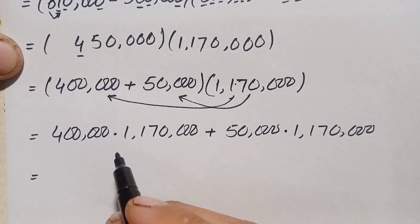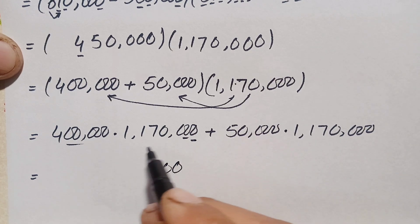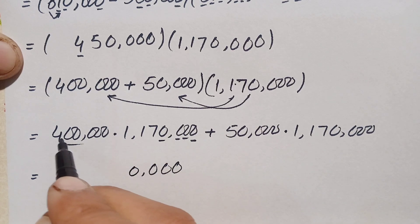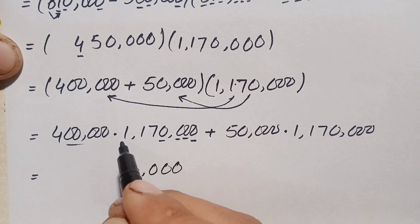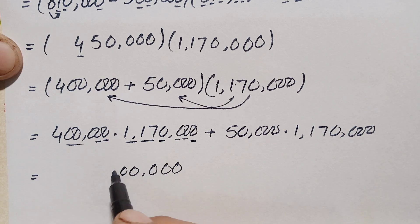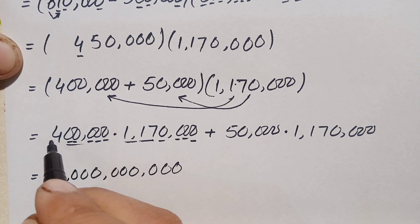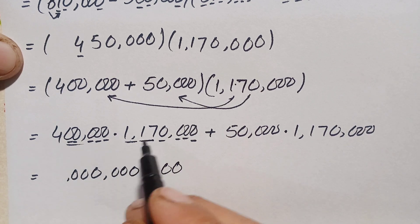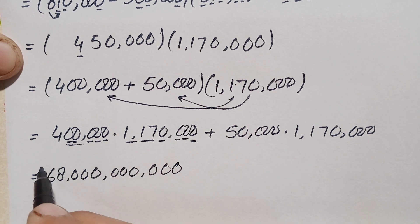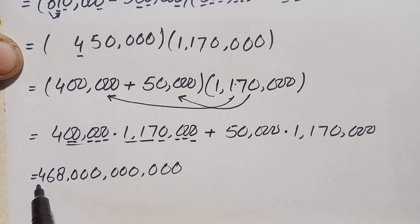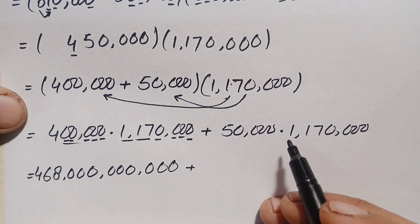For the first multiplication, 400,000 times 1,170,000: 400,000 times each trailing zero gives zeros for those positions. Then we multiply 117 by 4: 4 times 7 is 28, write 8 carry 2; 4 times 1 is 4 plus 2 is 6; 4 times 1 is 4. So 117 times 4 is 468, giving a product of 468 billion.